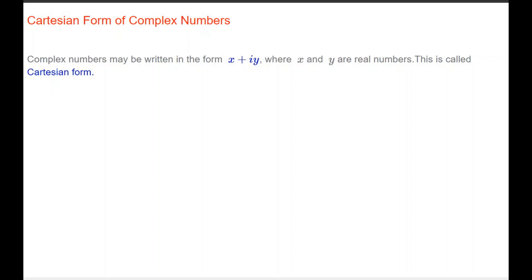Complex numbers may be written in the form of x plus iy, where x and y are real numbers, and the i is the square root of minus 1, as we said. This is called Cartesian form. For example, we can have 3 plus 2i, 4 minus 2 thirds i, 5i, which is really 0 plus 5i, and the real number 9, which is really 9 plus 0i.